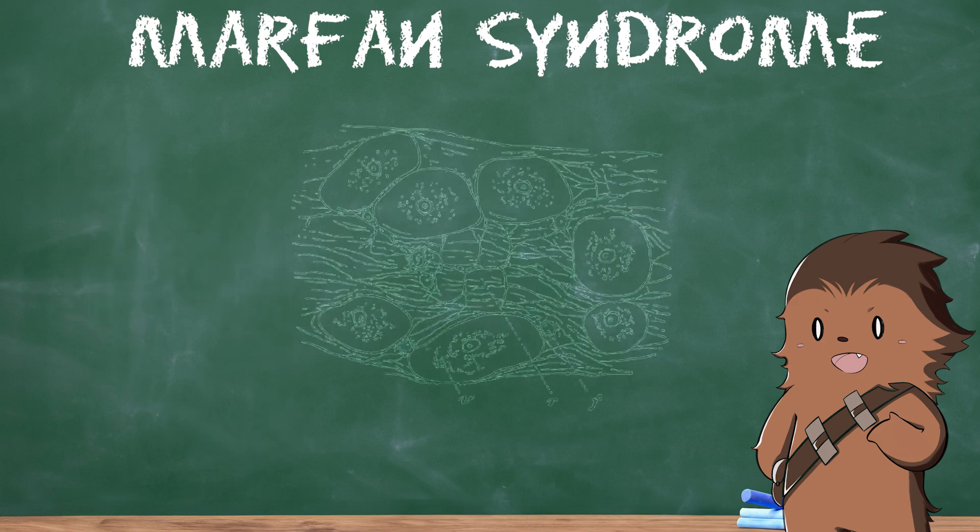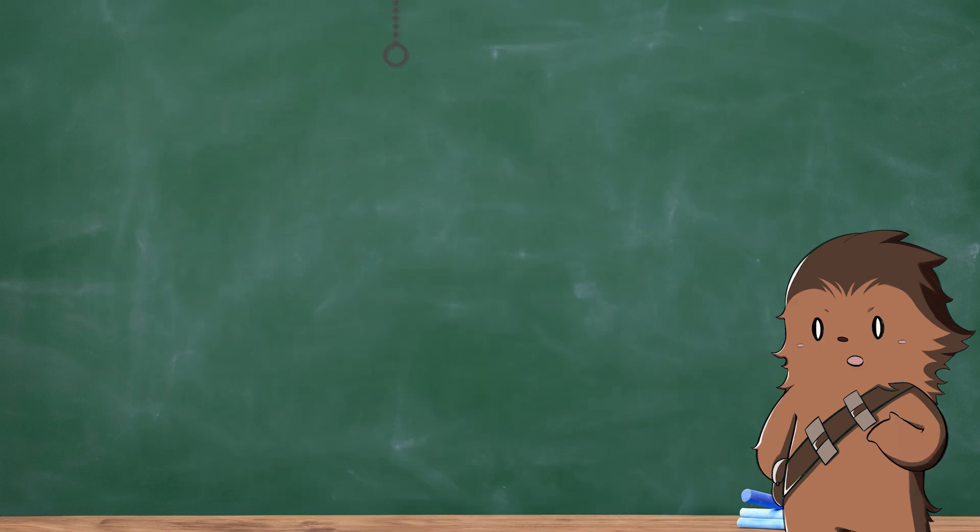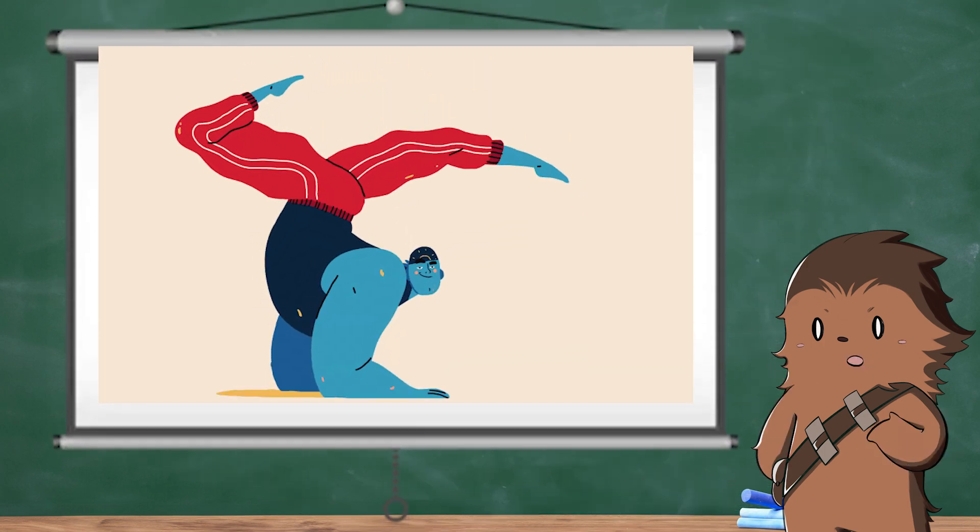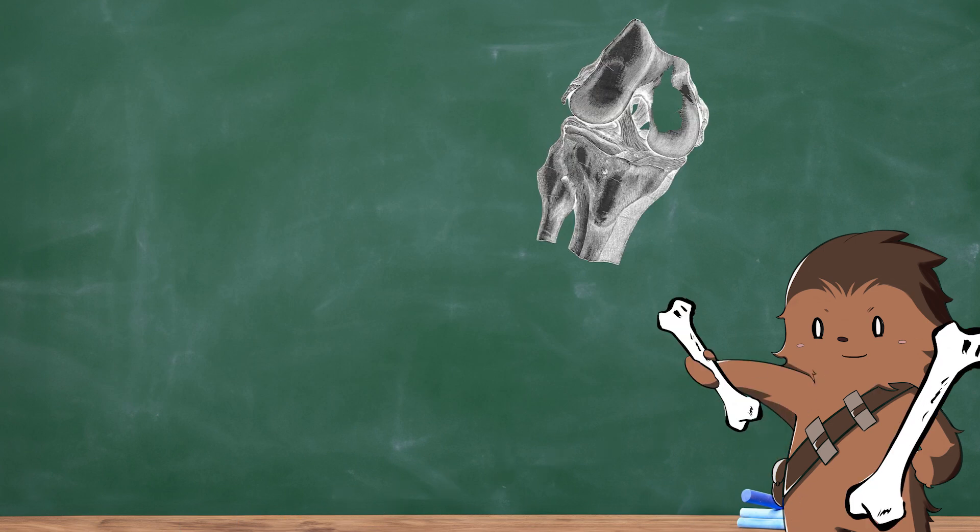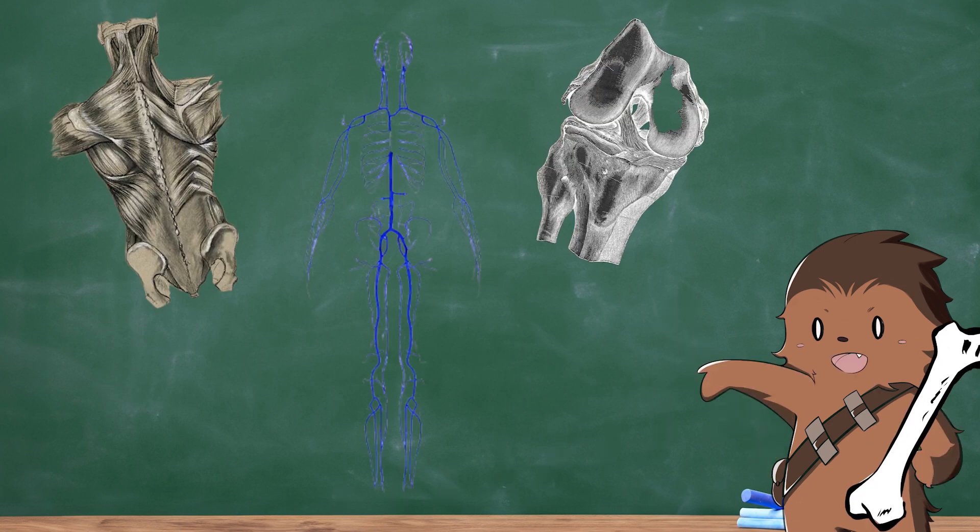Marfan Syndrome is a disorder that affects the connective tissue in many parts of the body. Connective tissue provides strength and flexibility to structures such as bones, ligaments, muscles, blood vessels, and heart valves.